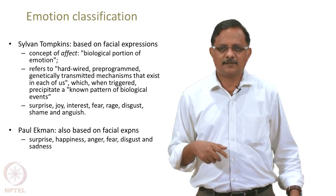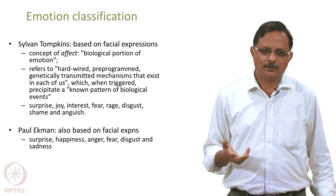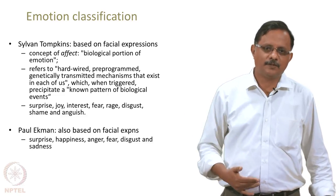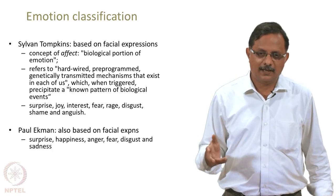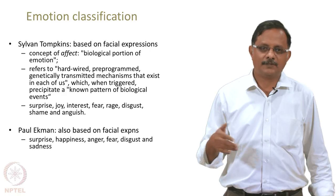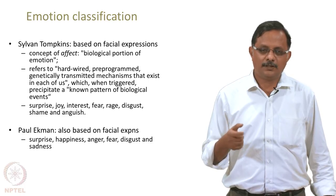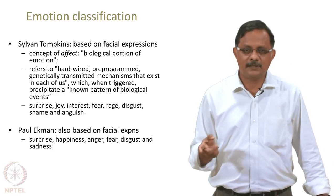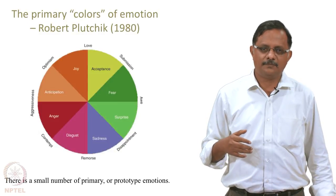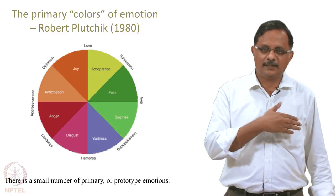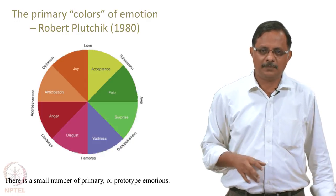The problem with previous lists of emotions is that they do not tell you how those emotions are related to each other. For example, love and hate are opposite emotions, but a list alone does not convey that. Similarly, amazement and astonishment are different shades of the same thing. To express relationships — opposites between emotions and different intensities of the same emotion — people found it convenient to describe emotions in terms of color. It is interesting that Indian aesthetic theory also associated emotions with colors, though that mapping is totally different from what we see here.